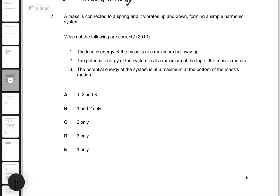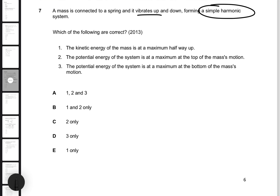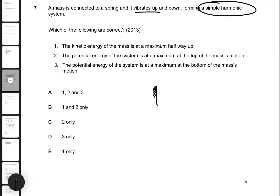Let's take a look at number seven. It says a mass is connected to a spring, it vibrates up and down, forming a simple harmonic motion system. Which of the following are correct? To understand this question, you need to understand the effects of a mass-spring system — where the equilibrium point is, and where velocity is at its maximum. Imagine a mass-spring system where the spring is fully stretched at one end, with the equilibrium point in the middle and the mass at the end.